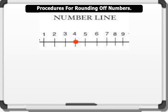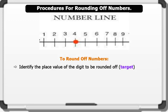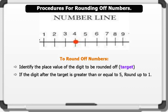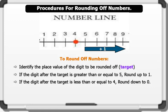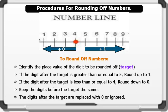The diagram on the board is a number line. Please pay attention as we use it to explain the procedures for rounding off. To round off numbers, we first identify the place value of the digit to be rounded off — we call this digit the target. If the digit after the target is greater than or equal to five, round up and add one to the target. If the digit after the target is less than or equal to four, round down and leave the target the same. Keep the digits before the target, while digits after the target are replaced with zero or ignored.